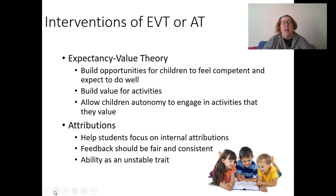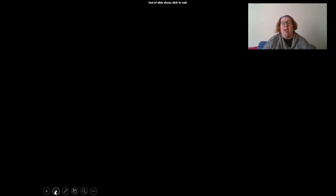And then attributions — helping students focus on those internal attributions, things that they can control, and keeping external attributions stable and constant so they know they can trust you to be fair and consistent, and treating ability as something they can influence by working hard. Those are the interventions of attribution theory, and some ways we can think about how we are influencing motivation in the classroom.